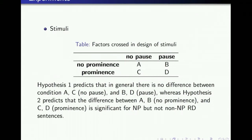Hypothesis 1 predicts that, in general, there is no difference between conditions A, C and B, D, whereas hypothesis 2 predicts that the difference between conditions A, B and C, D is significant for NP but not non-NP RD sentences.